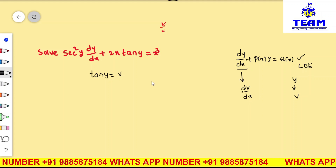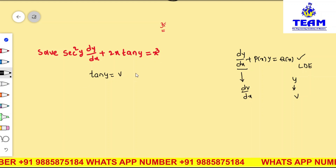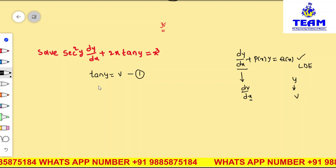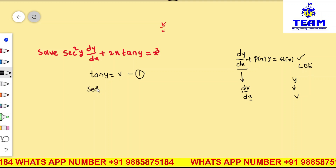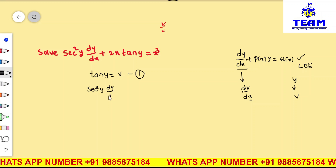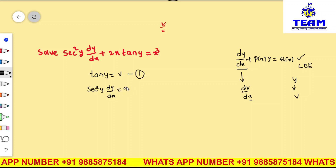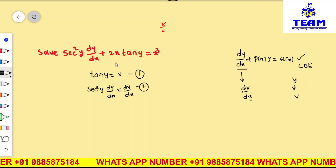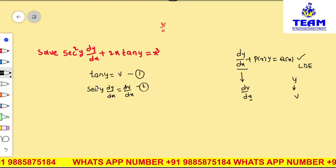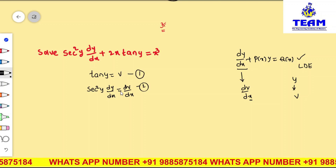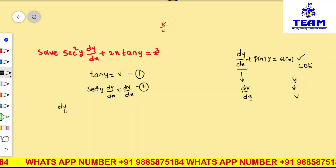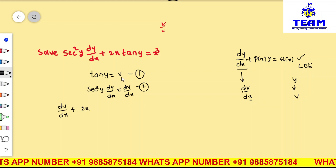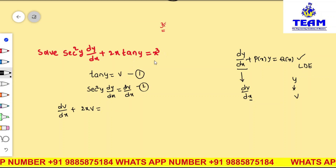Now I want dy/dx in terms of dv/dx. Differentiating v = tan(y) with respect to x gives sec²y · (dy/dx) = dv/dx. Substituting into the original equation: the left side sec²y · dy/dx becomes dv/dx, plus 2x · tan(y) = dv/dx + 2x·v = x³.